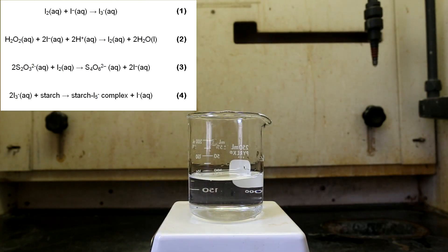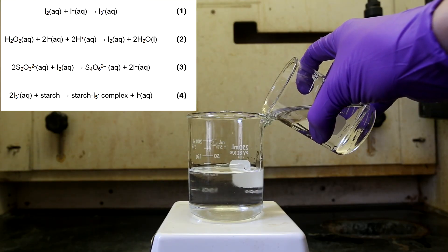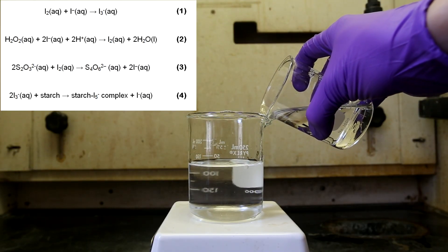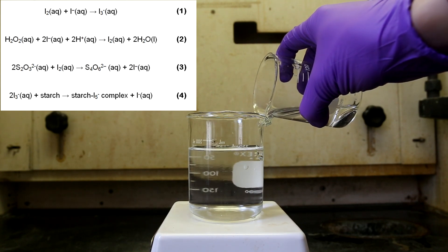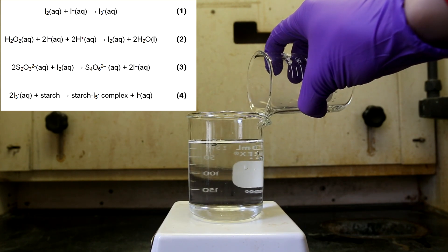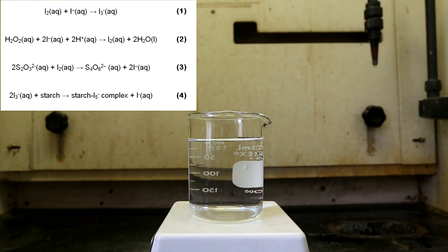This experiment actually involves four different reactions. I'll start with the second one, which is the slowest, and because of this, it is the rate-determining step. Aqueous iodide molecules react with hydrogen peroxide to form iodine.